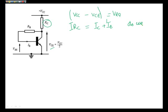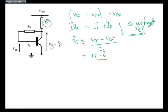Depends on the value of beta. The question you should ask yourself is, do we forget the value of IB? Depends on the question whether you actually get rid of it or not. Let's make our life easy. Let's get rid of IB. Therefore, we can say an approximation would be RC is approximately equal to VCC minus VCE, all divided by IC. And that equals 12 minus 6 divided by 4 milliamps.